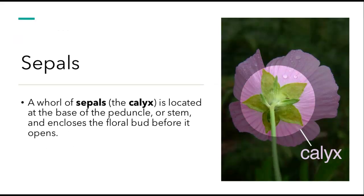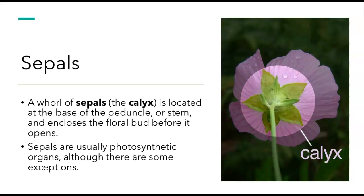The sepals are the little leaves, basically, on the bottom. The whorl of sepals is called the calyx. The calyx is located at the base of the peduncle, or stem, and encloses the floral bud before it opens. So when you see flowers about to bloom and they're covered by the green leaves, basically — those are the sepals. If you look at all of the sepals together, it's called the calyx. Sepals are usually photosynthetic because they're green, although there are some exceptions.